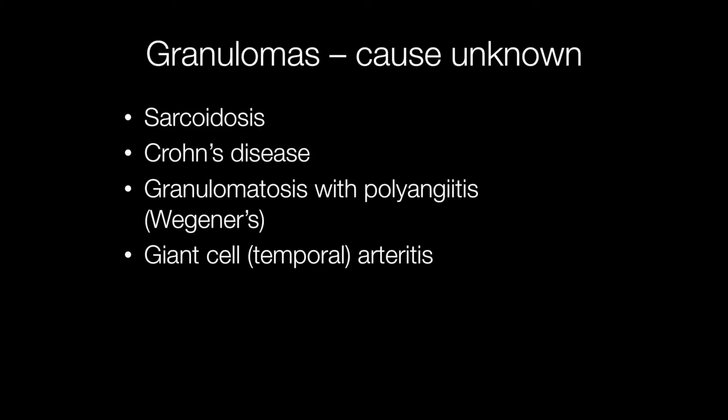An important group of diseases where the specific cause of the granulomatous inflammation is unknown includes sarcoidosis, Crohn's disease, granulomatosis with polyangiitis — previously known as Wegener's disease — and giant cell or temporal arteritis.